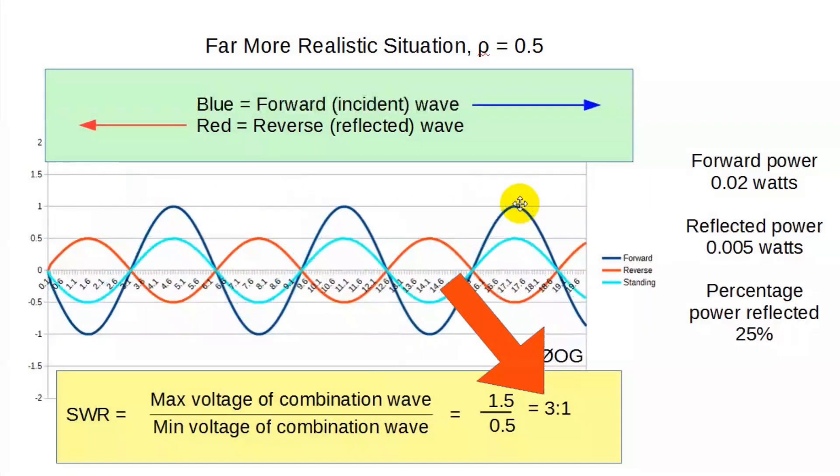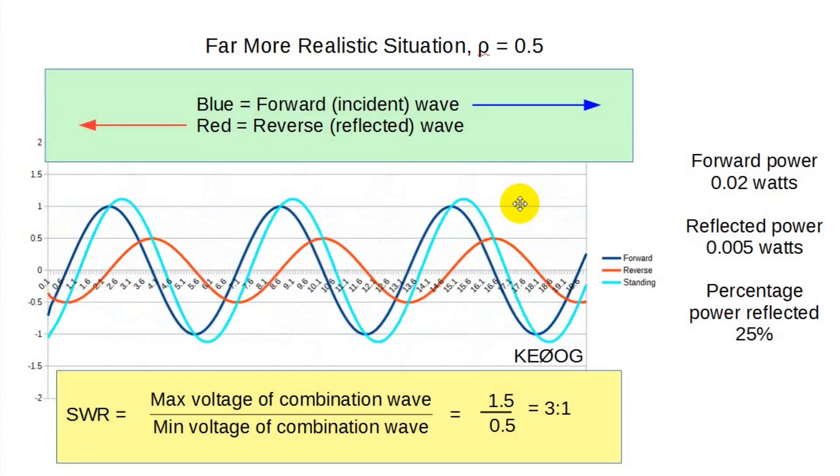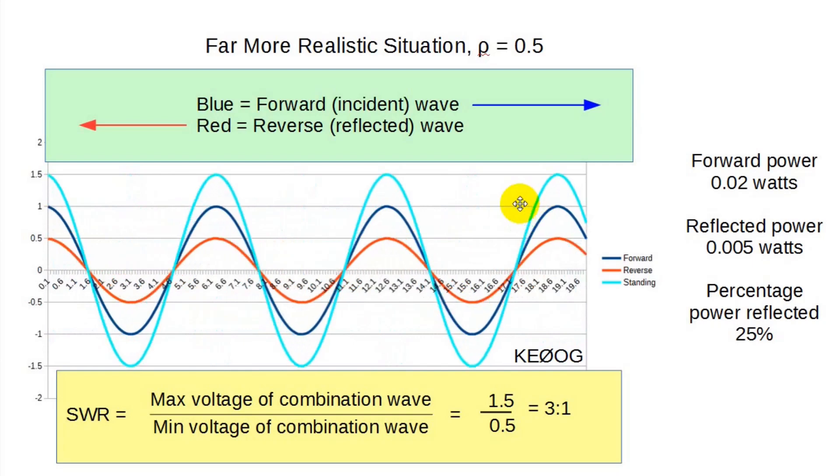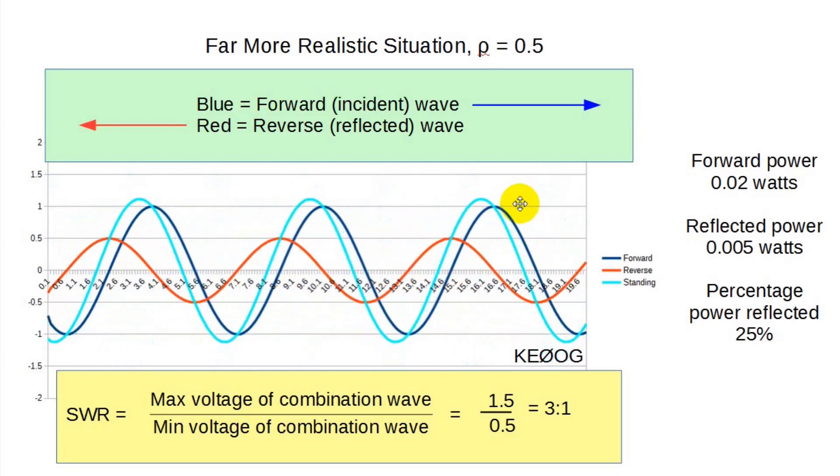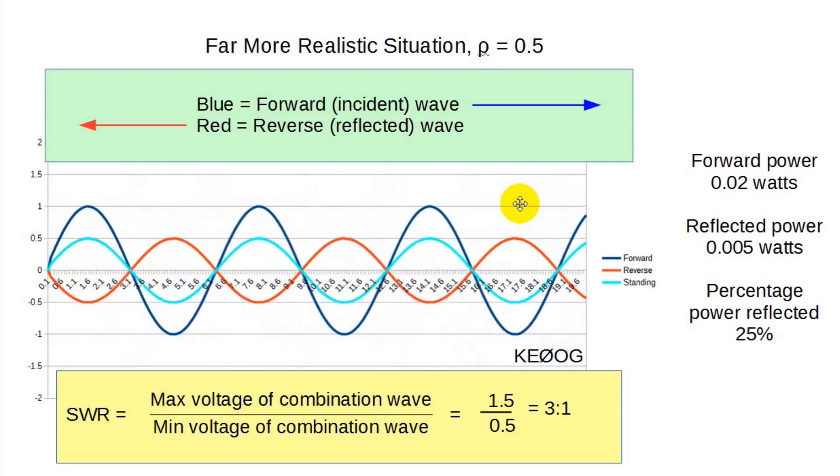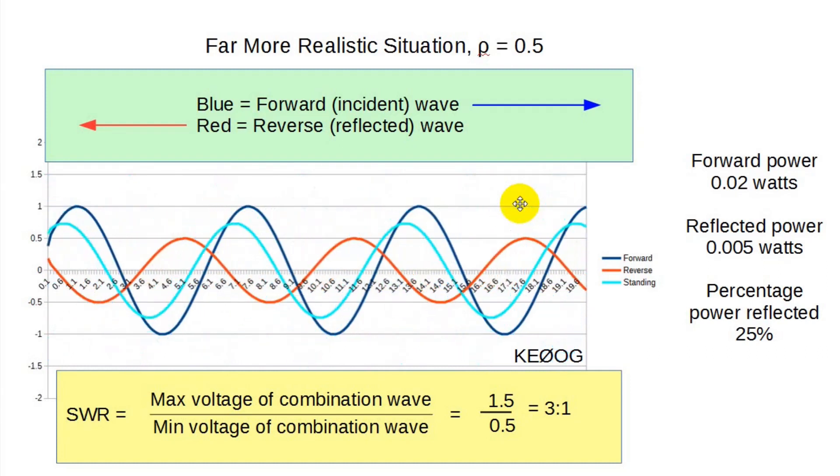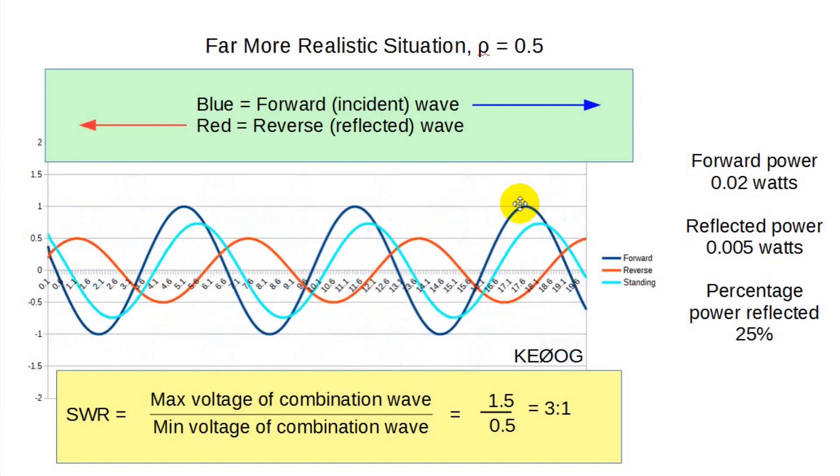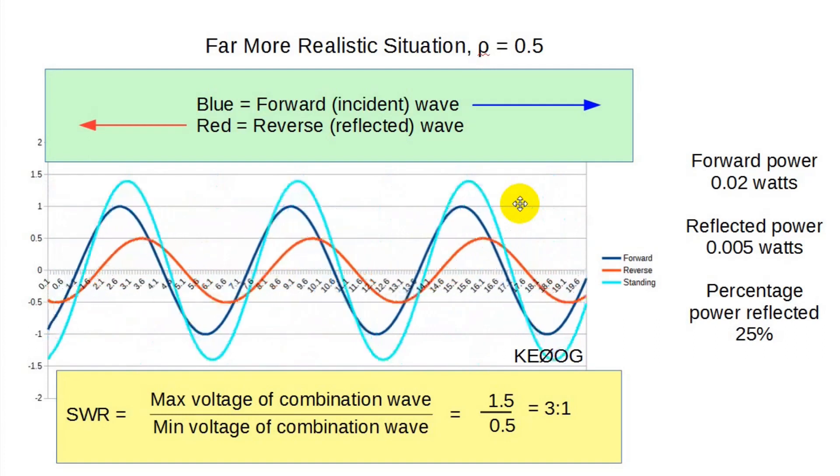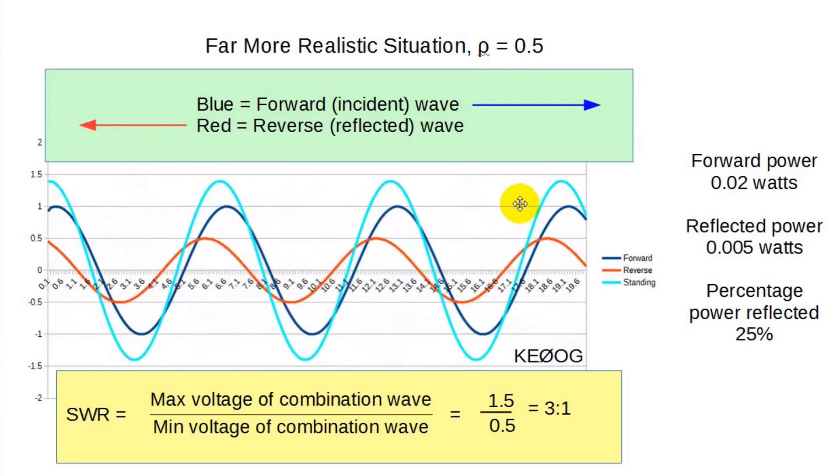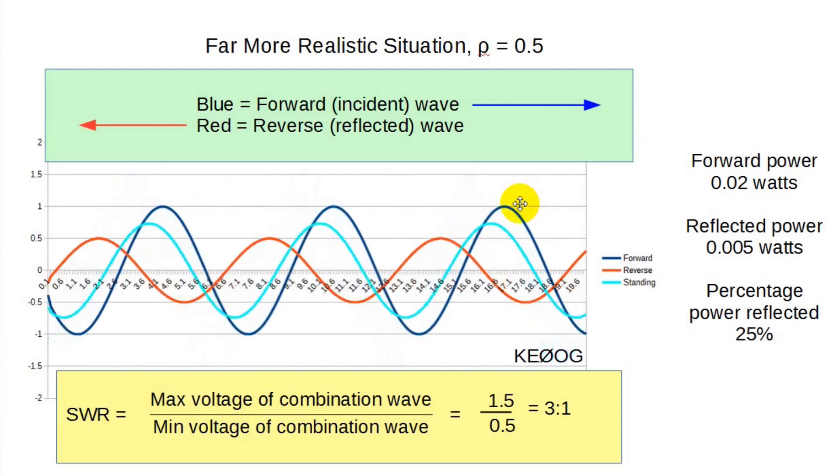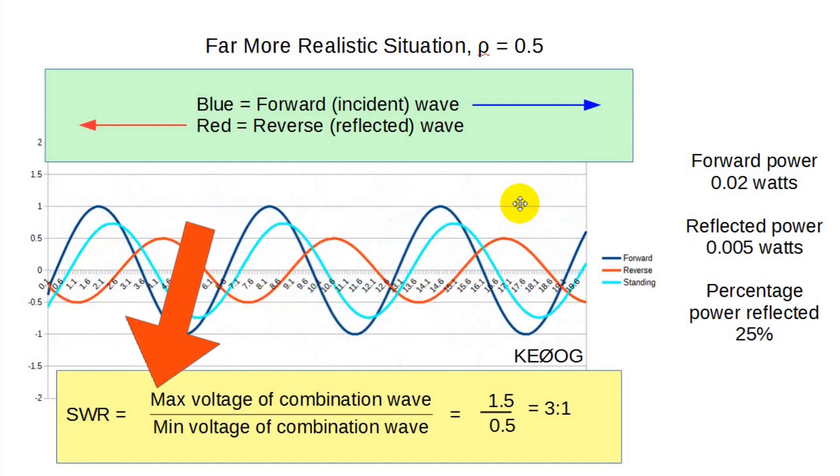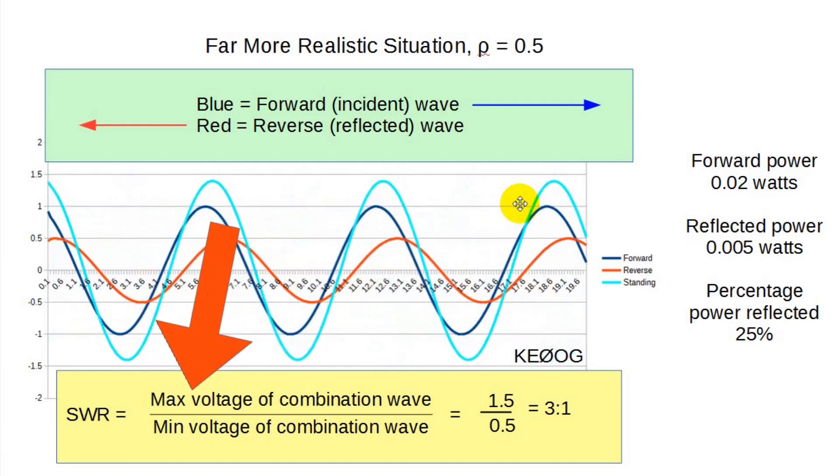From this we can compute the SWR directly as the ratio of 1.5 to 0.5, or 3. By the way, we can compute this from the reflection coefficient also. Rho is 0.5, so SWR by formula is 1 plus 0.5 divided by 1 minus 0.5 for an answer of 3, or 3 to 1. Now let's just look at one more thing here.